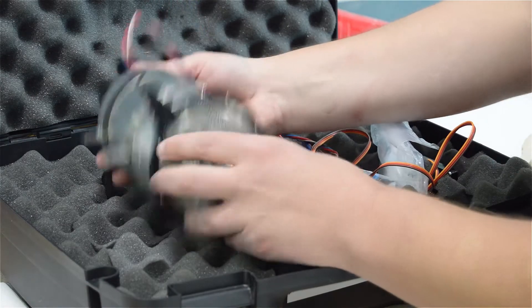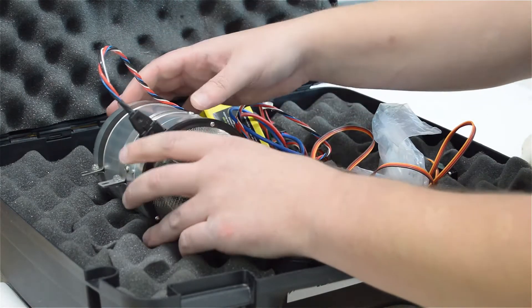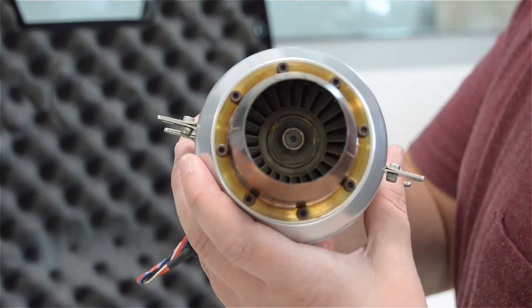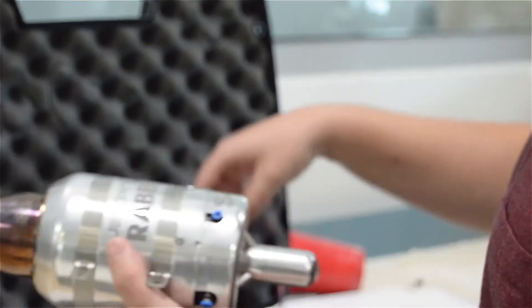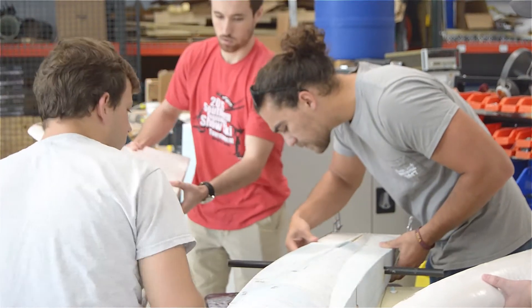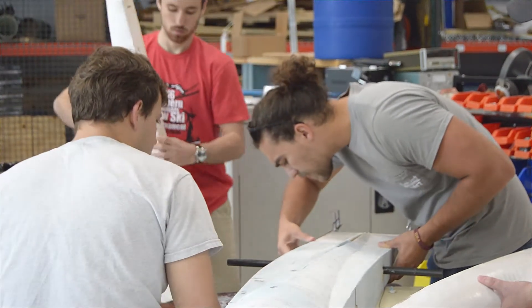We chose specifically a compound delta wing. The first delta, the first sweep angle, is a very high angle. This allows for airflow to go straight to our jet engines.